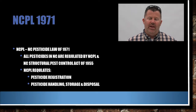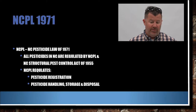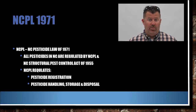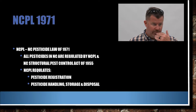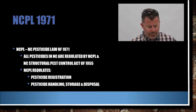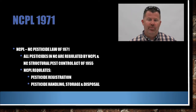The North Carolina Pesticide Law of 1971 states that all pesticides in North Carolina are regulated by the NC Pesticide Law and the North Carolina Structural Pest Control Act of 1955. Pesticides used in ornamentals and turf are regulated by the 1971 law. It also regulates pesticide registration in North Carolina and the handling, storage, and disposal of all pesticides.